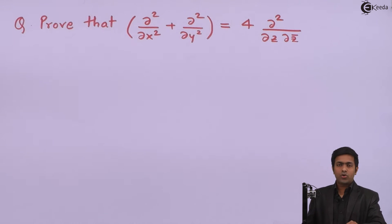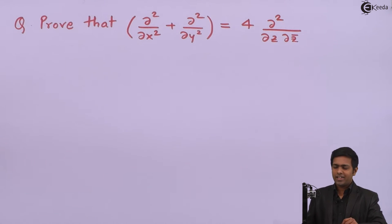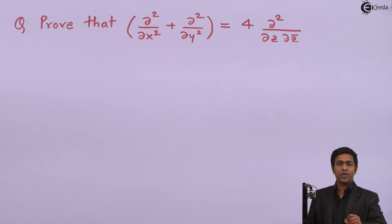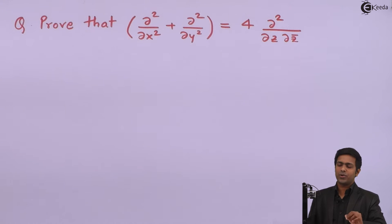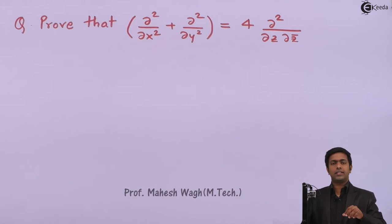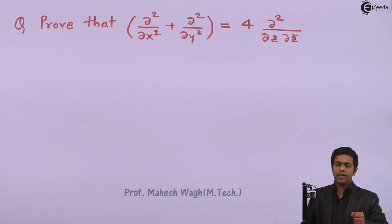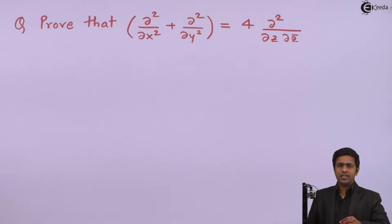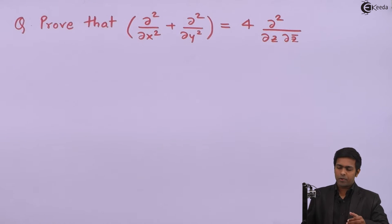Hi friends. In this problem we have to prove that ∂²/∂x² + ∂²/∂y² is equal to 4 times ∂²/∂z∂z̄. This is the standard property of an analytic function. The question is how to prove this result.